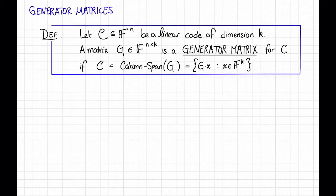Next, we can define a generator matrix for a code. We already saw an example of this for the Hamming code, but now we can define it in more generality.